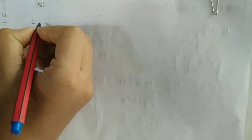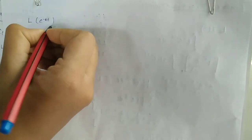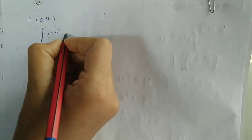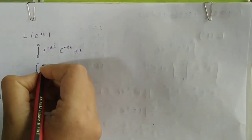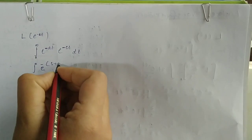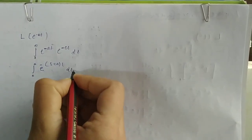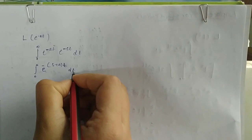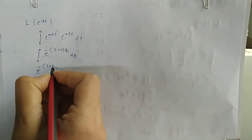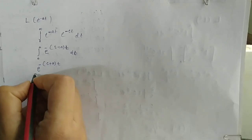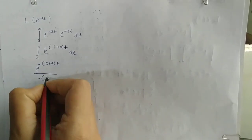Now for the Laplace transform of e raised to minus at. L{e^(-at)} equals the integral from 0 to infinity of e raised to minus at times e raised to minus st dt, which gives the integral from 0 to infinity of e raised to minus s plus a into t dt. Integrating, we get e raised to minus s plus a into t divided by s plus a.